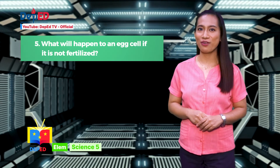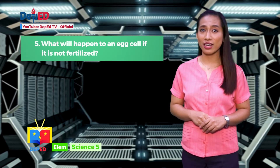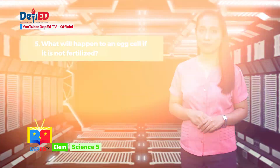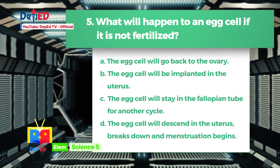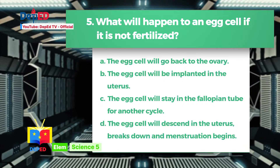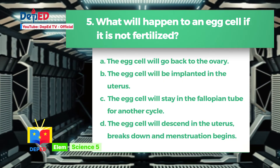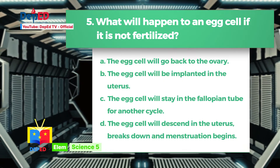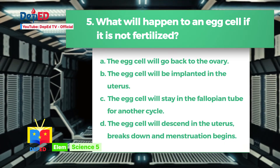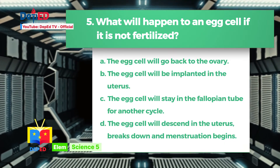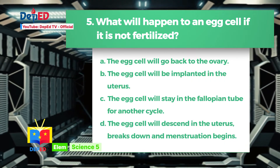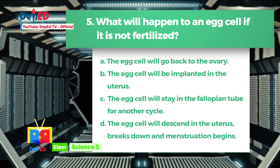Last question, number five: What will happen to an egg cell if it is not fertilized? A. The egg cell will go back to the ovary. B. The egg cell will be implanted in the uterus. C. The egg cell will stay in the fallopian tube for another cycle. D. The egg cell will descend in the uterus, break down, and menstruation begins.